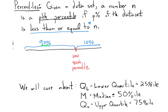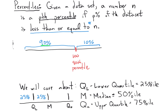So 75% of the data lies below the upper quartile. The way it works is we have these dividing lines: the lower quartile, the median, and the upper quartile, and in each section we have 25% of our data. That's why they're called quartiles — they break up your data into 25% chunks, giving a quarter of the data in each section: below the lower quartile, between the lower quartile and median, between the median and upper quartile, and above the upper quartile.